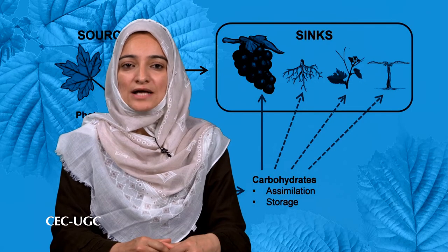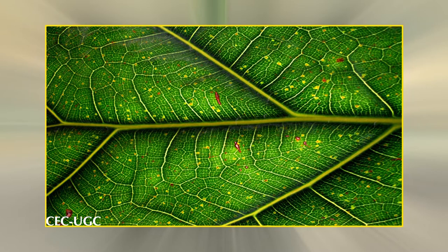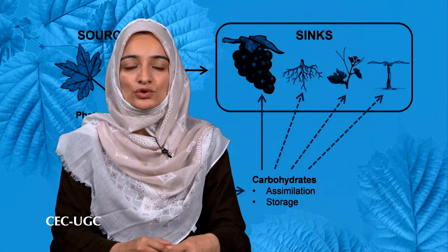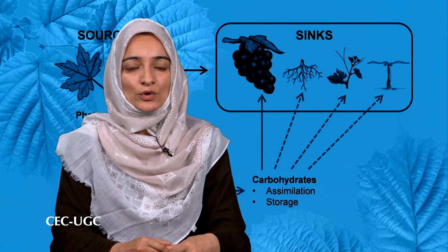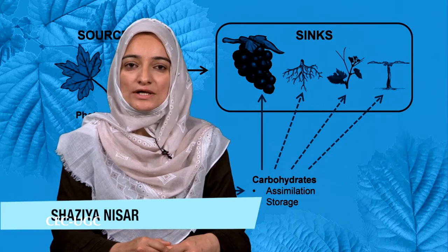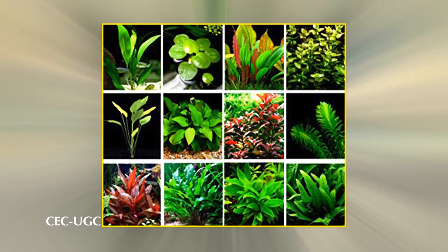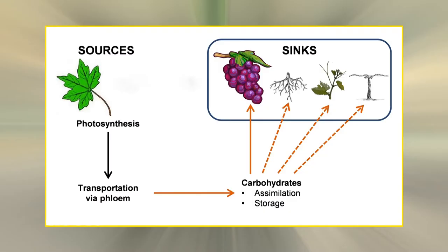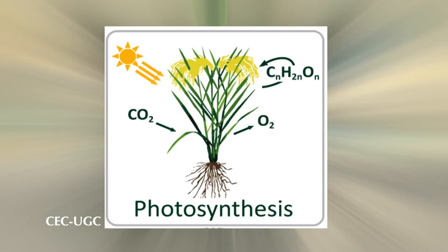Let us start with an introduction on source and sink in plants. Higher plants fix atmospheric carbon in chlorophyll-containing green tissues, usually leaves, during photosynthesis. This fixed carbon is either directly utilized for the plant's own growth by respiration, exported to other organs for their growth and sustenance, or transferred to storage organs for later utilization. Sugars are mainly exported in the form of sucrose, hence plant organs are divided into source and sink types. Source organs are photosynthetically active, export photoassimilates, and are generally comprised of mature leaves.